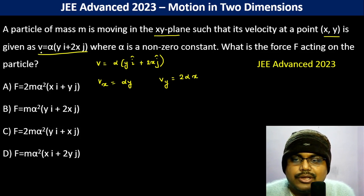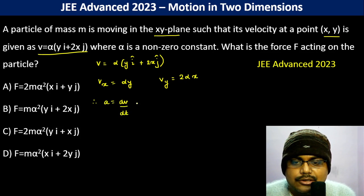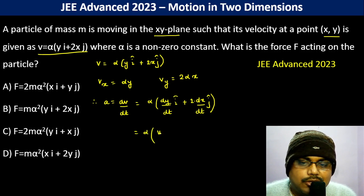So now if v is this, therefore acceleration becomes dv by dt, which is alpha into dy by dt i cap plus 2 into dx by dt j cap, which is alpha into vy i cap plus 2 into vx j cap.